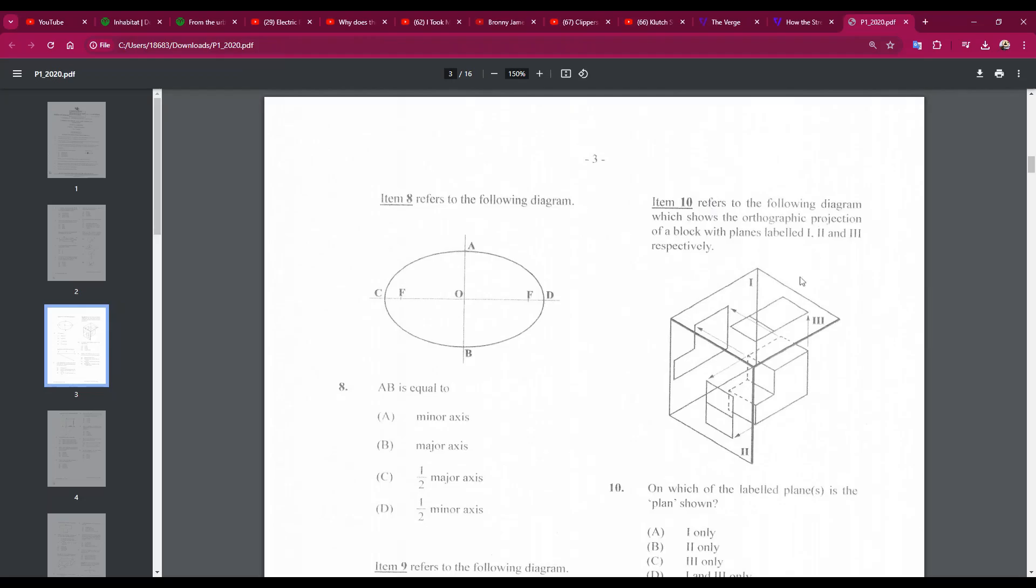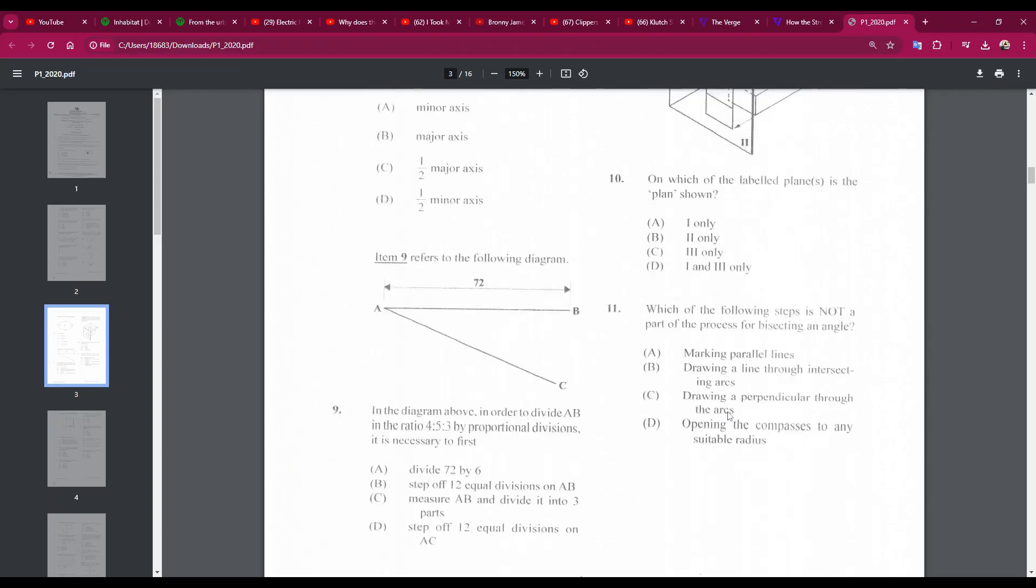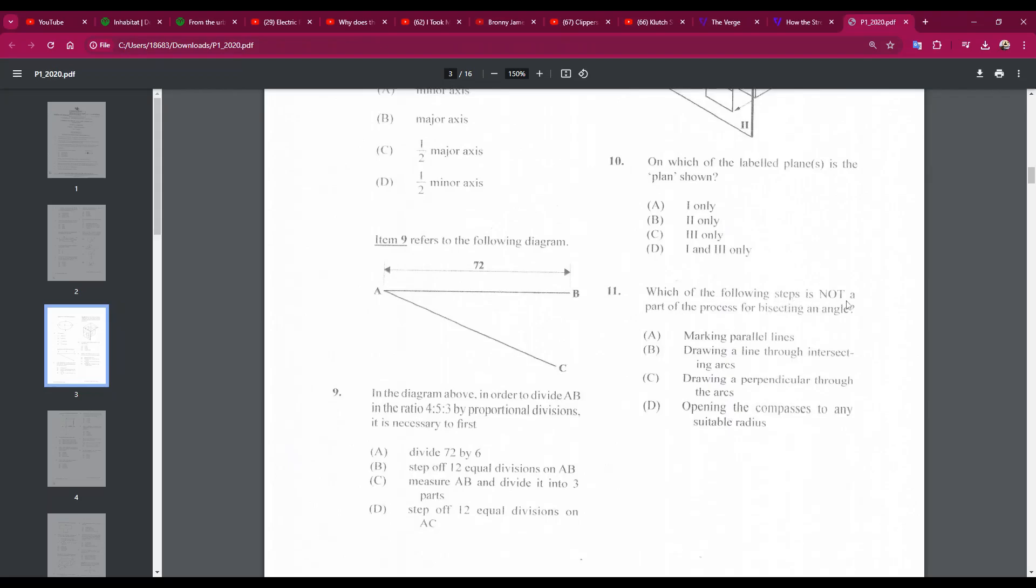Number 10 refers to the following diagram. On which of the labeled planes is the plan shown? All right, we know the plan is the view from above, so that will be three. Three, the answer is C. Number eleven: which of the following steps is not a part of the process for bisecting a line? The answer is A. Marking parallel lines is not part of the step or process for bisecting an angle.